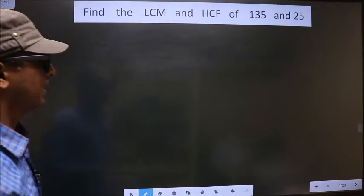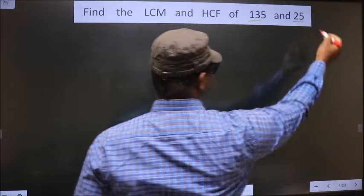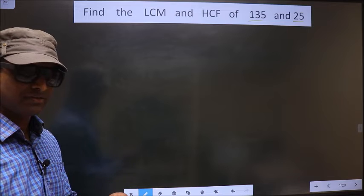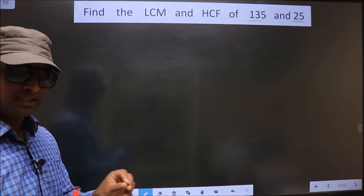Find the LCM and HCF of 135 and 25. To find the LCM and HCF, first we should do the prime factorization of each number separately.